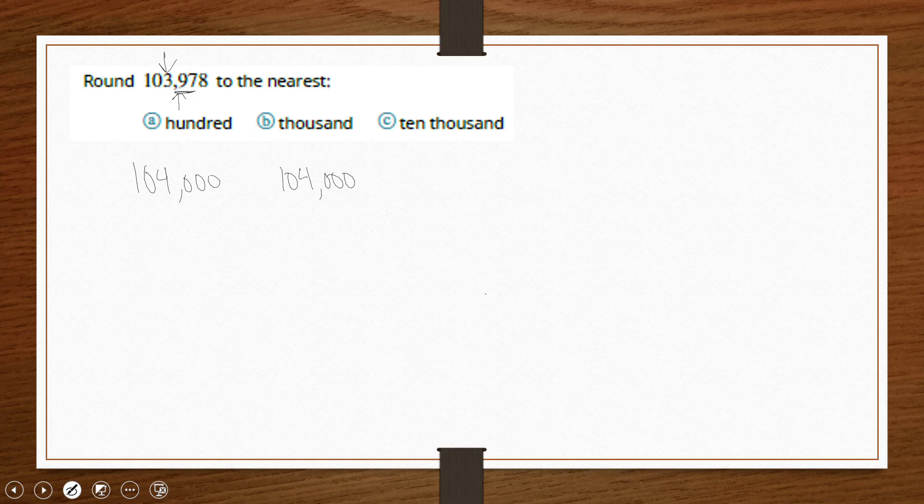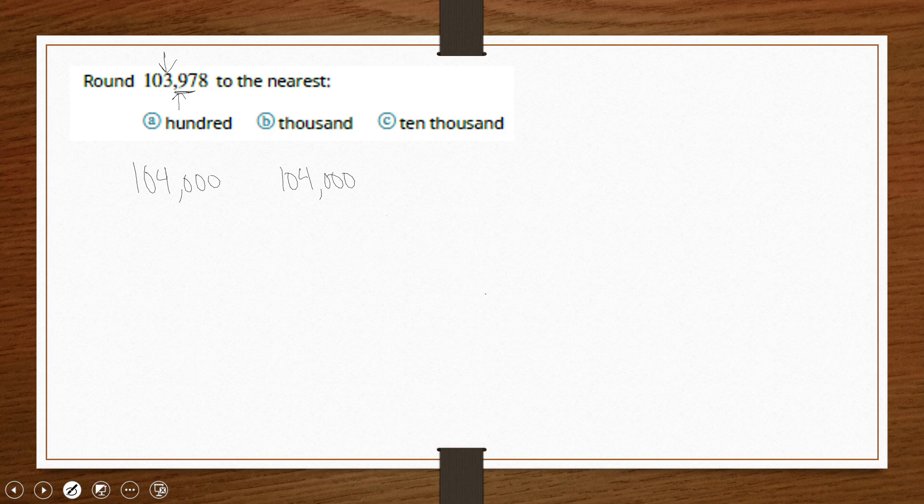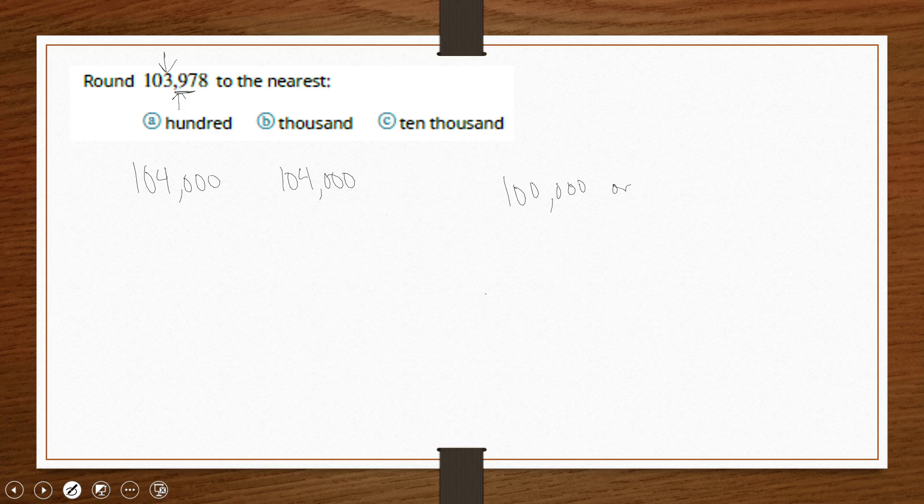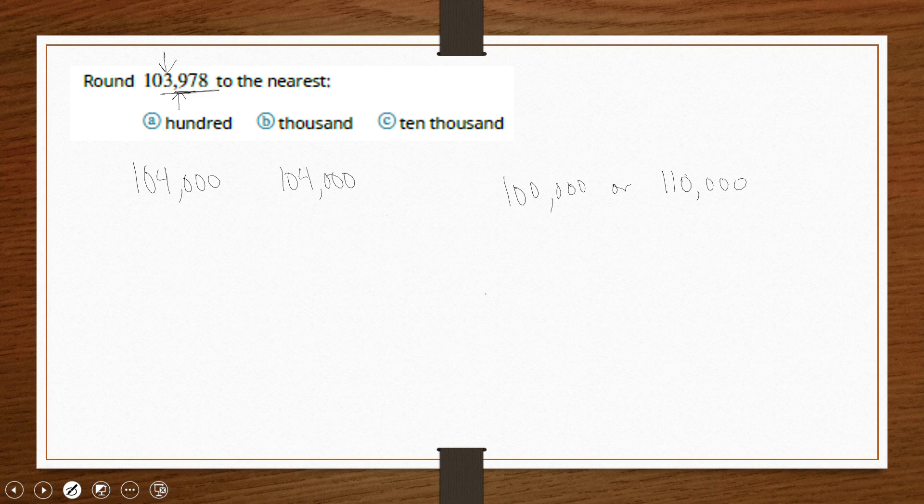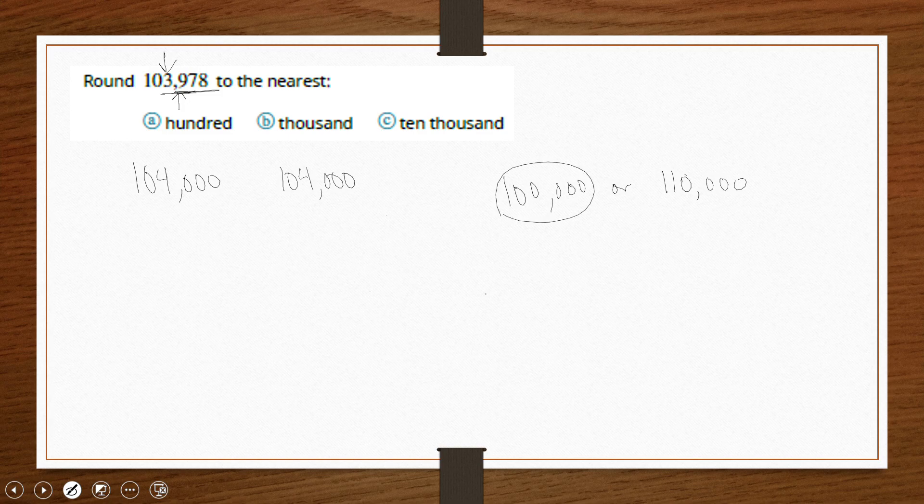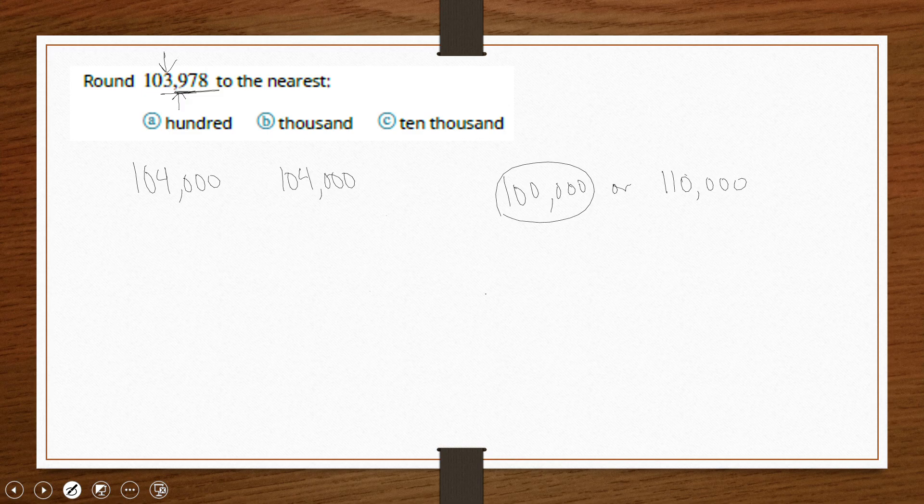Now for 10,000, the question becomes, is 103,978 closer to 100,000 or 110,000? Well let's look at the digits to the right again. So the 3,978 is the portion we're interested in, which sounds like it's a lot closer to 100,000 than it is to 110,000. So that would be our closest for rounding. Thank you.